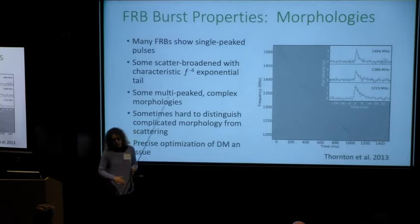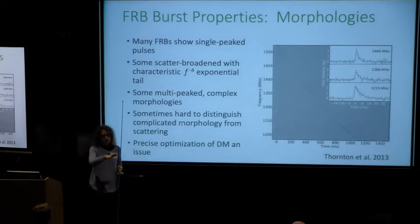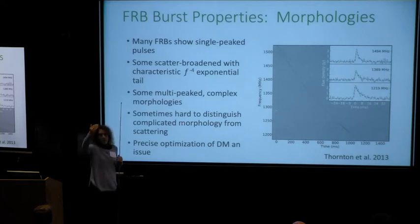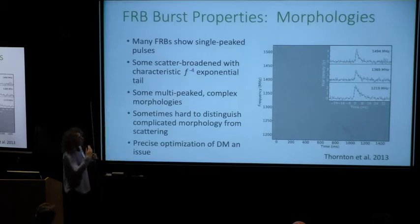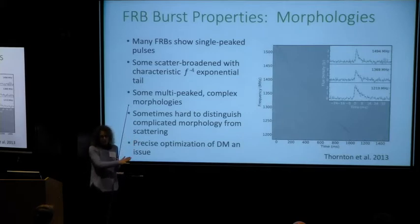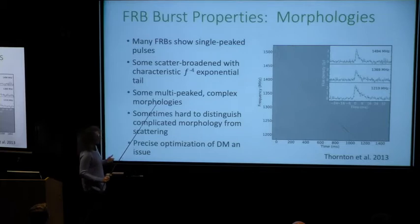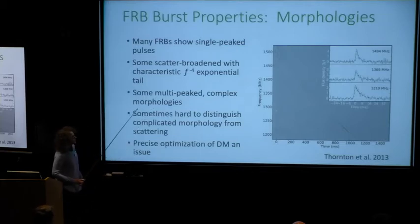Scattering comes from multipath propagation along the line of sight. Both the dispersion measure and scattering have imprinted on the source a history of its propagation to us — from the host, through intervening galaxy halos, all the way through the IGM and into our galaxy. Unlike gamma-ray bursts, there's a lot of information encoded in fast radio burst profiles that's quite interesting, and will be a treasure trove for years to come.